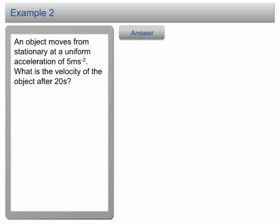Example 2. An object moves from stationary at a uniform acceleration of 5 meter per second per second. What is the velocity of the object after 20 seconds? Click on the answer button to proceed.